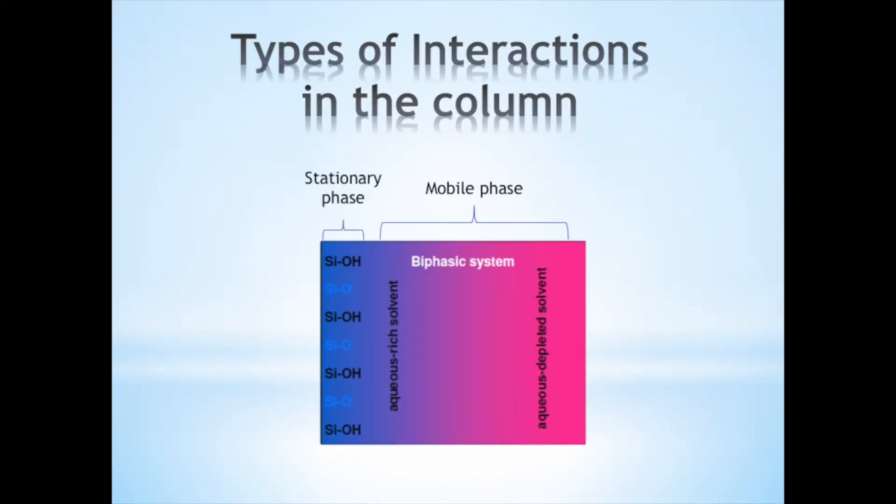HILIC is performed using a polar stationary phase. The mobile phase employed in HILIC is highly organic in nature, 60 percent or larger solvent concentration, containing a small percentage of aqueous solvent, buffer, or other polar solvent. The water in the mobile phase forms an aqueous-rich layer absorbed to the polar surface of the stationary phase and an aqueous depleted layer in the mobile phase. Polar analytes preferentially partition into this aqueous-rich layer and are retained through a combination of partition, polar interactions like hydrogen bonding and ion exchange.